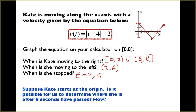Suppose Kate starts at the origin — is it possible to determine where she is? We can. We find the area under the curve — the positive areas and the negative areas — to see how far she has traveled. If we know where she starts, we add that to her displacement to find where she ends up.